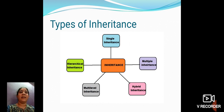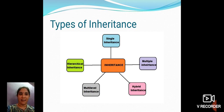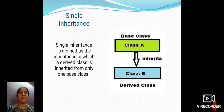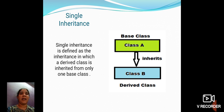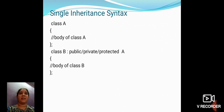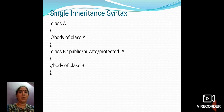Types of inheritance. Single inheritance: a derived class is inherited from only one base class. Here, class A is the base class and class B is the derived class which is inherited from class A. The general syntax includes Class A with its body, followed by Class B inheriting from A using a visibility mode — public, private, or protected — which indicates the visibility mode of inheritance.